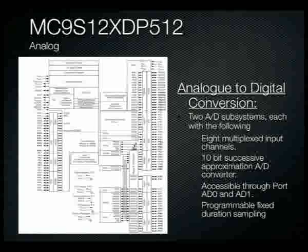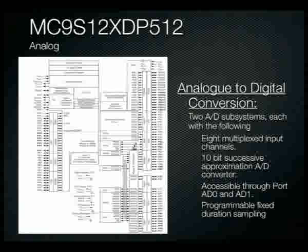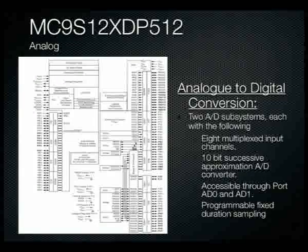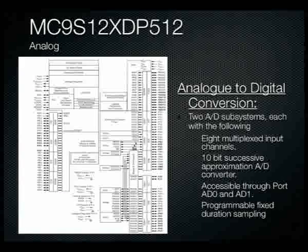Analog-to-digital conversion is built into the chip. There are two banks of eight multiplexed input channels for a total of 16 multiplexed ADC input channels. The ADC uses 10-bit successive approximation, converting any analog input value between 0 and 5 volts into a 10-bit binary number. Programmable fixed-duration sampling and programmable repetition sampling are also available. These subsystems are accessible through ports AD0 and AD1.